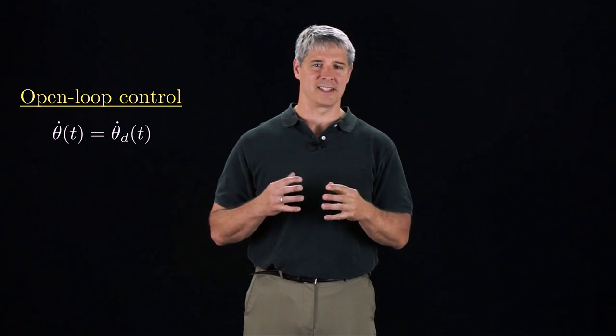The first idea is to use open-loop control. Since we know the desired velocity at any instant, our controller could simply command this desired velocity at all times. This is called open-loop control, or feed-forward control, because there is no sensing of the actual joint position to close a feedback loop. If there is ever any error in the joint position, however, this open-loop approach cannot recover.